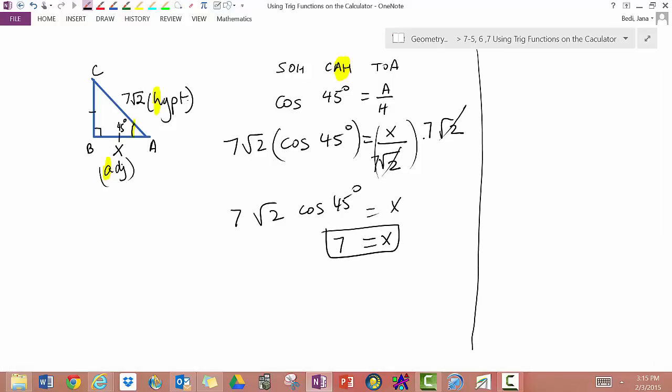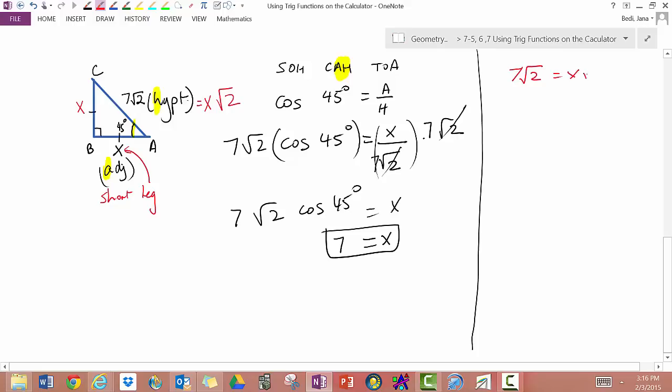When it's 45-45-90, we know that the hypotenuse, and I'm going to use the red color this time, is equal to the short leg times √2. So, the hypotenuse is equal to the short leg, which is x times √2. In fact, since this is isosceles, this will be √2 as well. So, I have my equation looking at the diagram. 7√2 equals x√2 divided by √2 divided by √2. x is equal to 7.